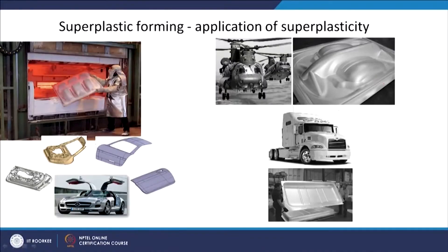The application of superplasticity is of course superplastic forming. When you have superplastic deformation — which is high temperature deformation — the flow stresses are very low, so you can deform a material just by using gas pressure. All the parts you are seeing here are metallic parts formed only using gas pressure, similar to glass blowing or making plastic parts. The material takes the shape of whatever die is there by simply applying gas pressure.